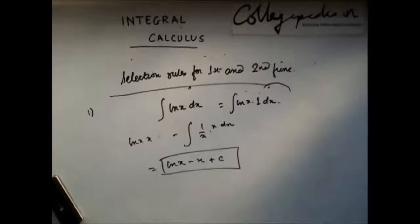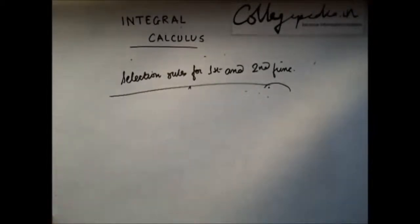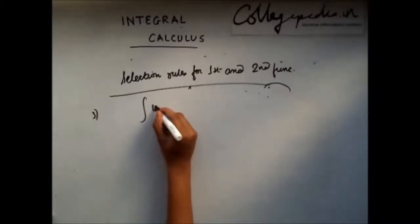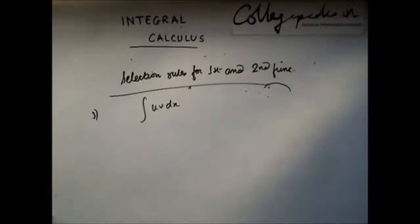Now let's see what the third rule says. The third rule says that if you land up in a situation where both functions u and v are directly integrable — that is, you know the integration of both functions — then how do you select the first function and how do you select the second function?